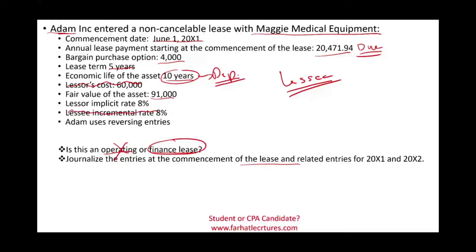What we're going to do next is compute the lease liability for Adam, prepare an amortization schedule, and journalize at least the first few entries to become familiar with how to journalize entries for a lease.